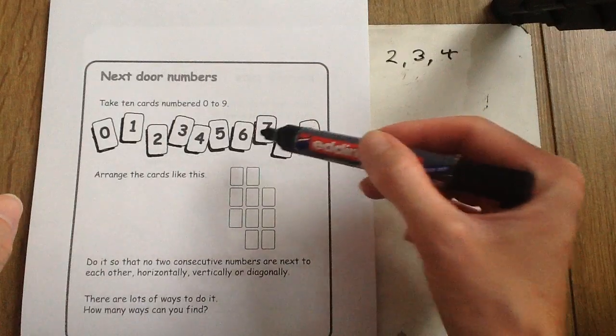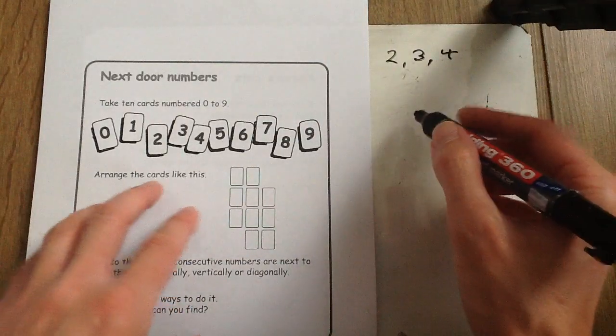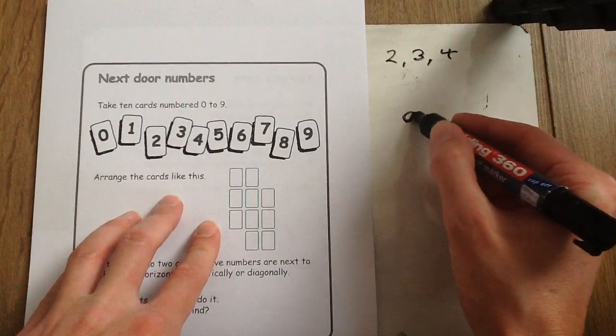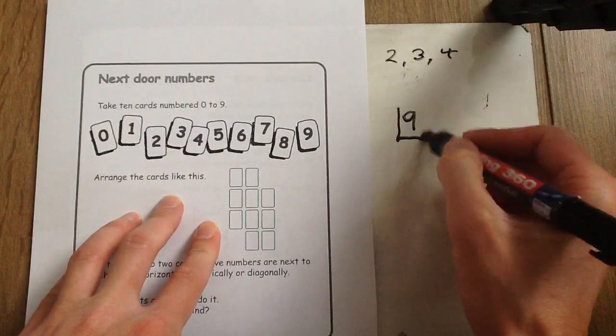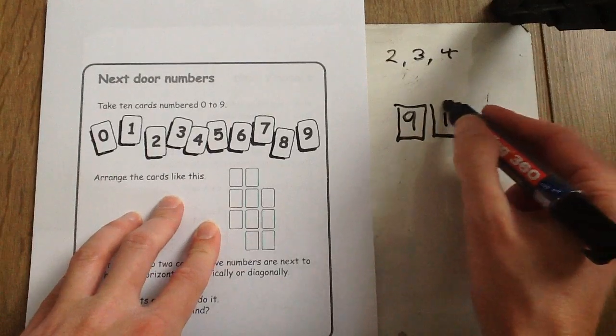So you have to arrange the digits into this pattern here. So here is a solution. You could have had 9 at the top next to the digit 1 because they are not consecutive. They are far apart.